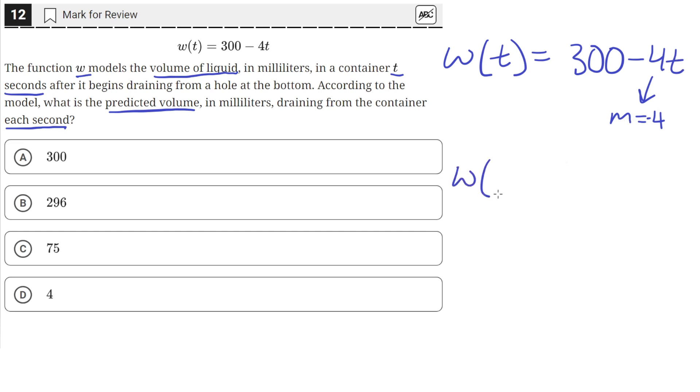For example, w of 1 is equal to 300 minus 4 times 1. So this would be the volume of the liquid 1 second after time has passed. So 300 minus 4 is just 296. So 4 milliliters of liquid were drained.